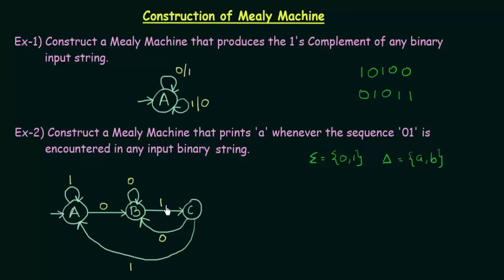Now let us model it and make it a Mealy machine. The Mealy machine should give outputs. The condition is it should print A when we get the sequence 0, 1. When do we get the sequence 0, 1? When we reach state C — that is when the transition from B to C on input 1 happens. So at that point I will print the output A. In all the other transitions I will write B, because I don't care what is printed there. My only concern is it should print A when it sees the sequence 0, 1.